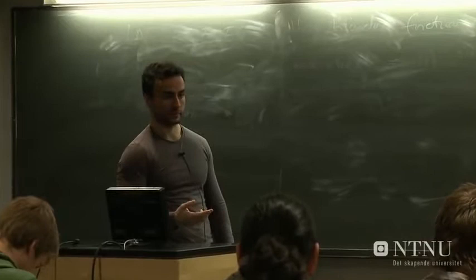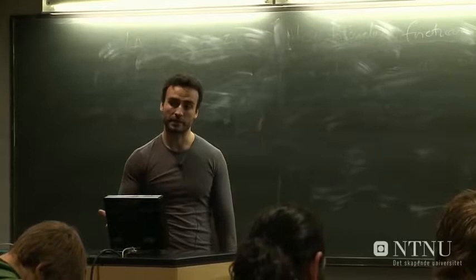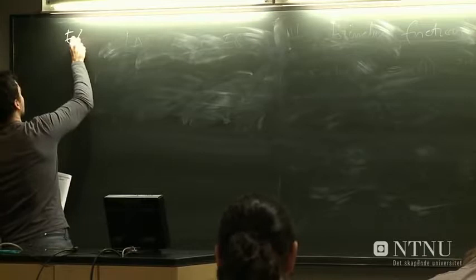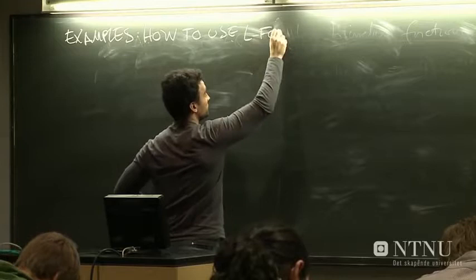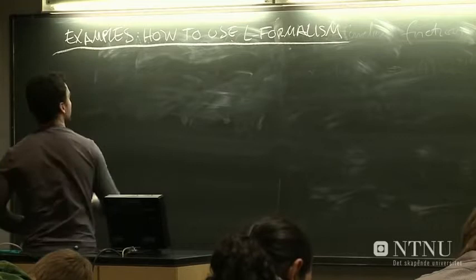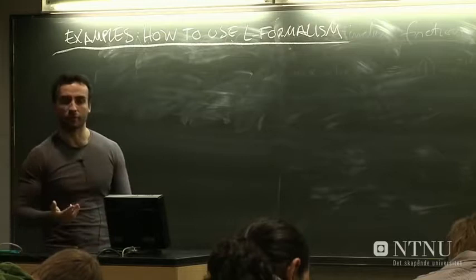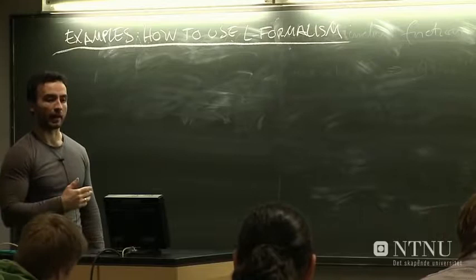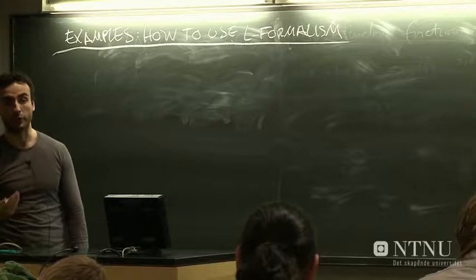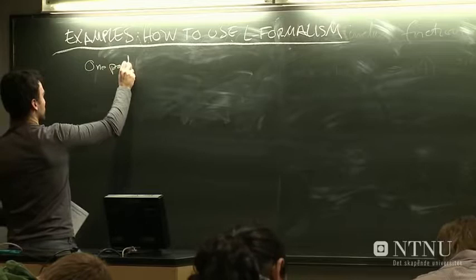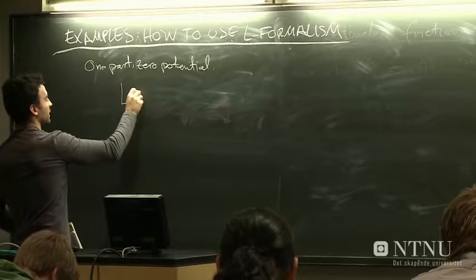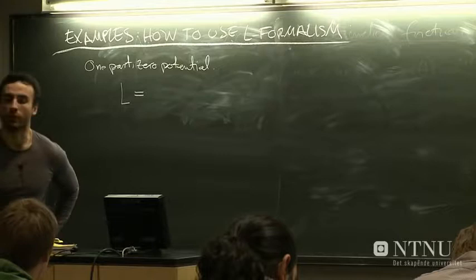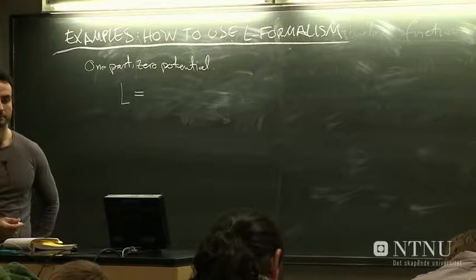Very well, so we've introduced the Lagrange formalism, and I figure we could take a look at a couple of examples to sort of show you how you can analyze various systems in practice. So, examples. And let's start off pretty easy. We consider one particle and Cartesian coordinates, and we consider a particle which is moving in zero potential. So it's a particle with purely kinetic energy.